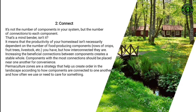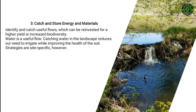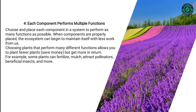Principle three: Catch and store energy and materials. Identify and catch useful flows which can be reinvested for a higher yield or increased biodiversity. Water is a useful flow — catching water in the landscape reduces our need to irrigate while improving the health of the soil. Strategies are site-specific.